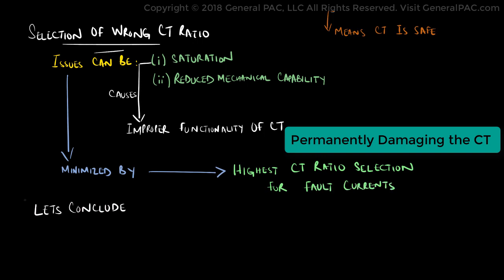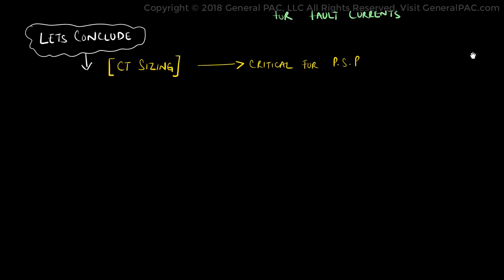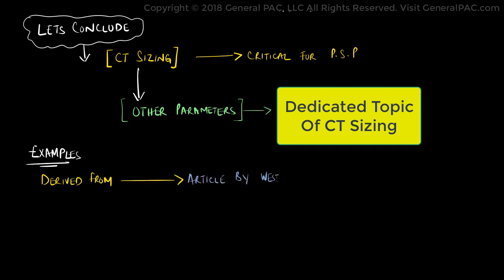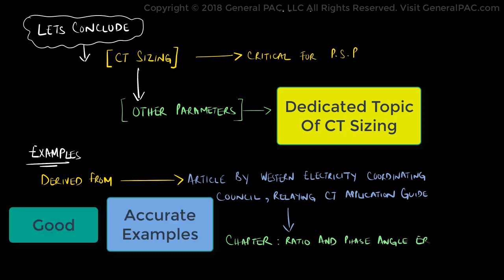To conclude this discussion, knowledge of CT sizing is critical for power systems protection. Other parameters for CT sizing will be discussed in more detail in a dedicated topic of CT sizing. The examples used in this tutorial are derived from the article by the Western Electricity Coordinating Council, Relaying Current Transformer Application Guide — see the chapter on ratio and phase angle error. Rest assured, these are good and accurate examples.